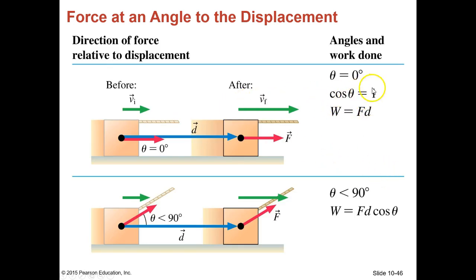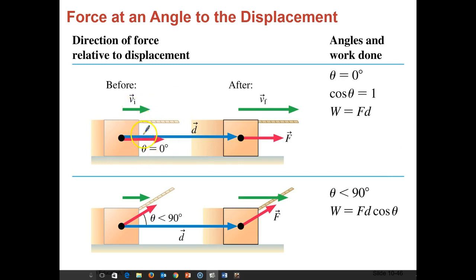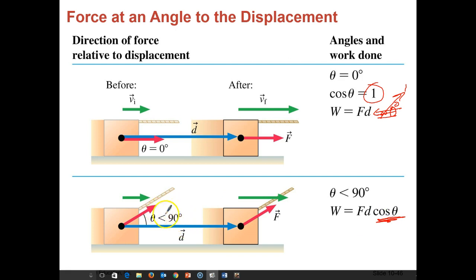If the force is in the same direction as the motion, the cosine of the angle is just equal to one — cosine of zero degrees equals 1 — so we don't have to apply any reduction. If the angle is anything less than 90, we use cosine of the angle because that gives some reduction in the amount of force in that direction. We only want to know the F·D·cosθ component — not the force up and to the right.